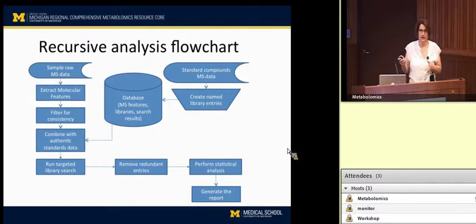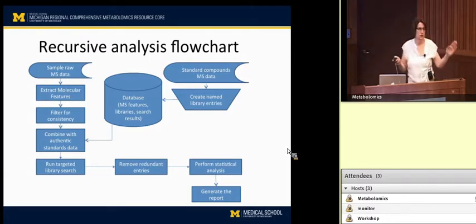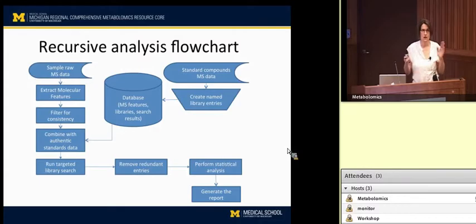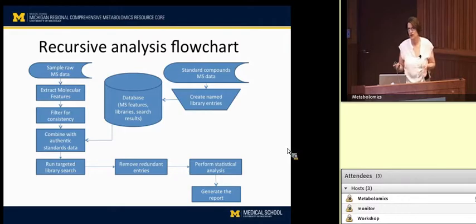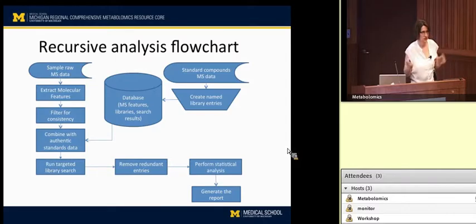In terms of data reduction, the first thing you can do is collapse the molecular ion and its isotopes together and call that a feature. It's purposely called a feature because we don't know that everything in the spectrum is a true endogenous metabolite that you're interested in. So we just call it features to start with.